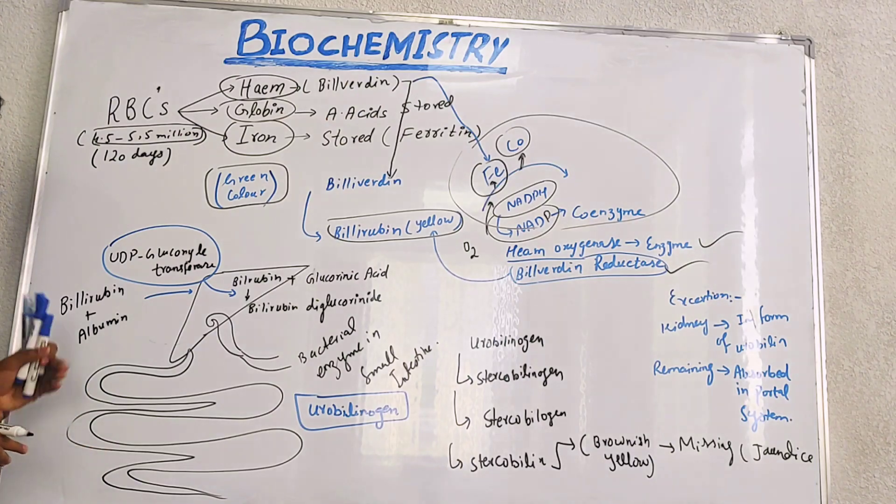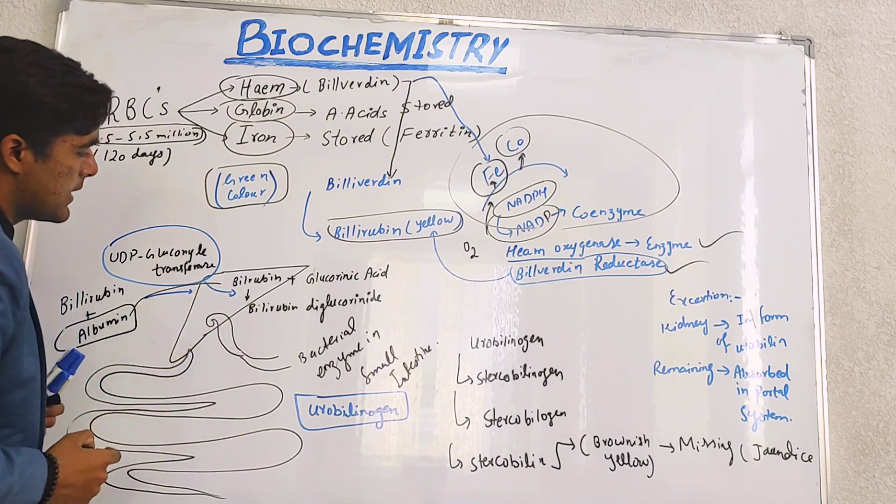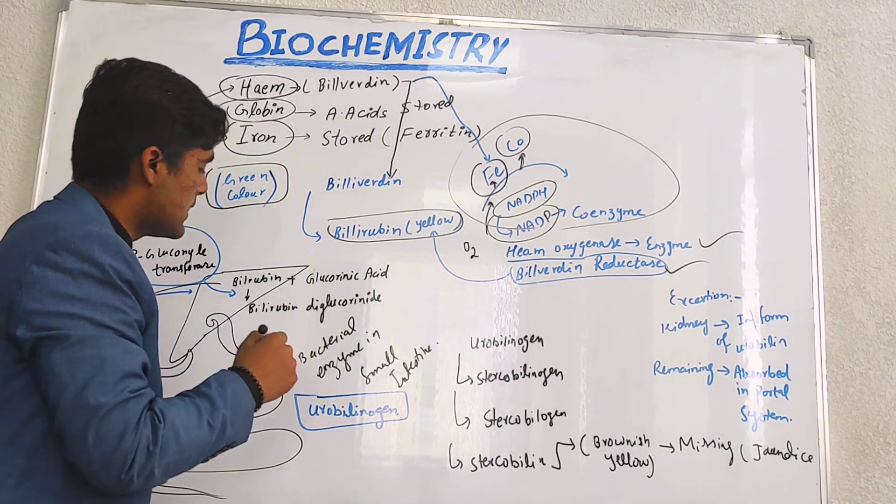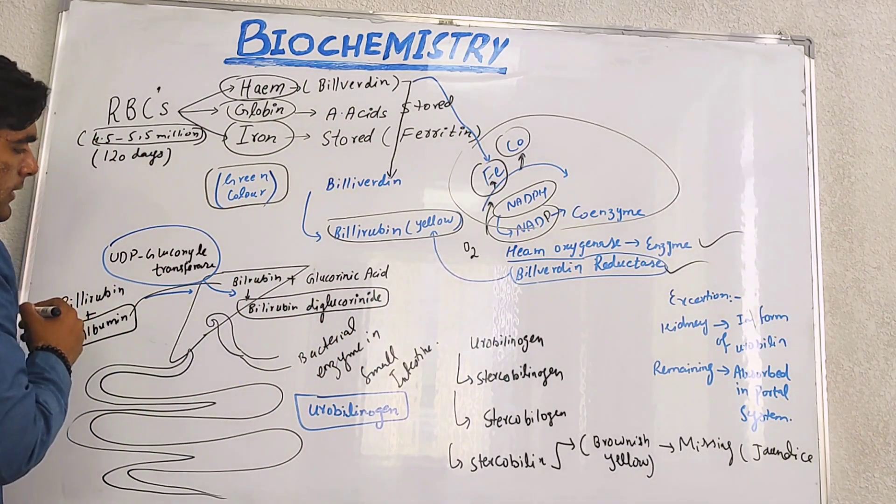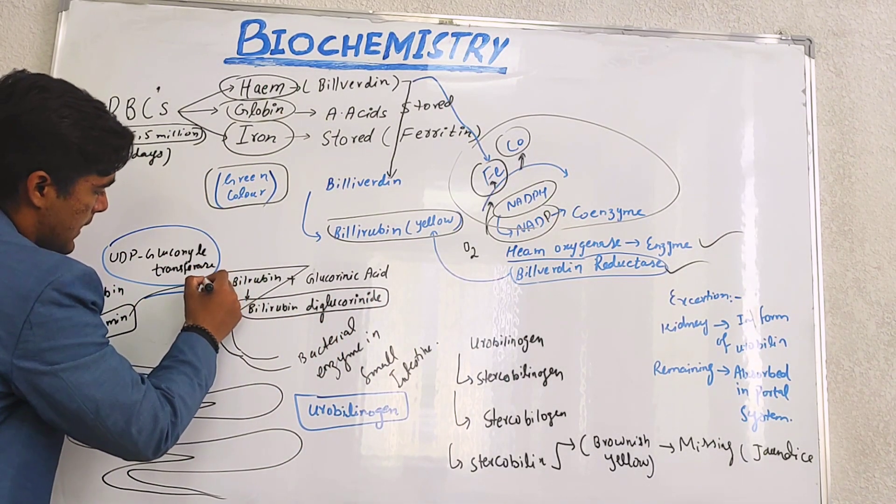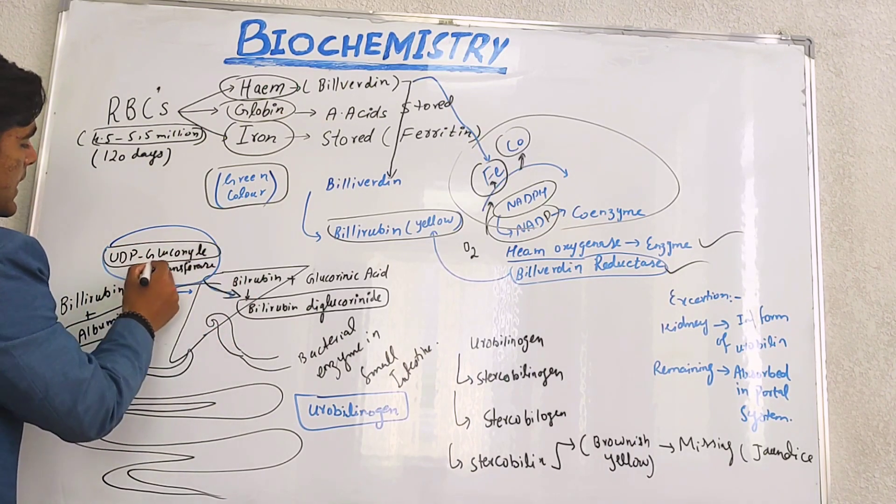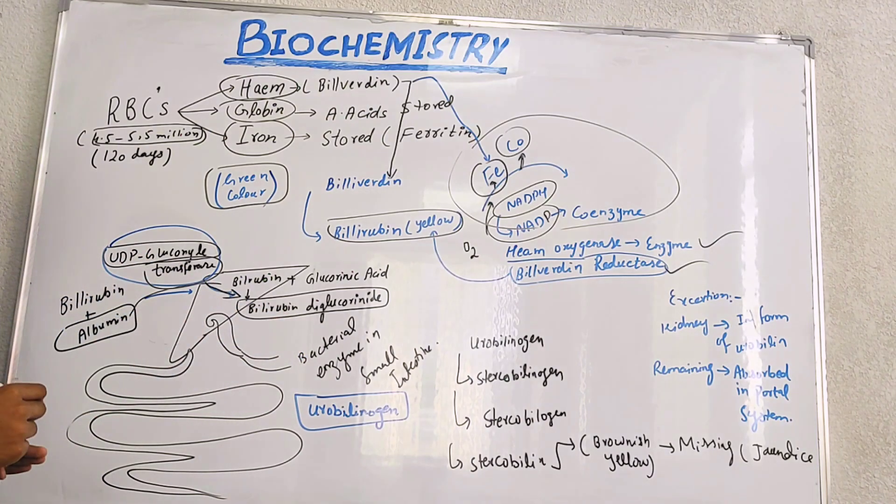Now, this bilirubin will combine with albumin and it will go into the liver. In the liver it will further combine with glucuronic acid and form bilirubin diglucuronide. This process takes place in the presence of the enzyme UDP glucuronide transferase.